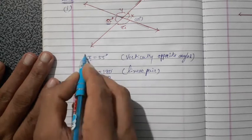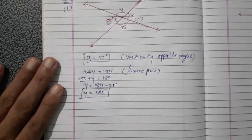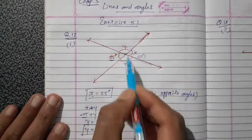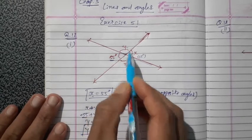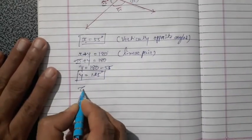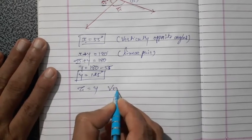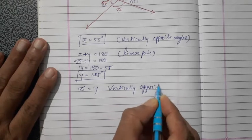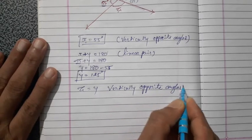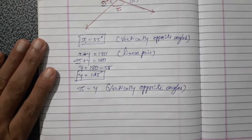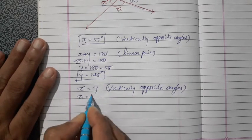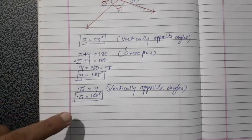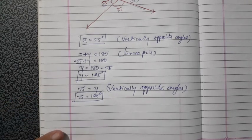So now you have the value of x and y. Now look at the figure again. y and z are also vertically opposite angles, means they are equal in measurement. So z equals y, because vertically opposite angles. Put the value of y, so z is also 125 degrees. So x, y and z are all confirmed.